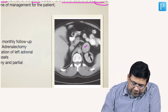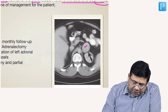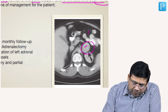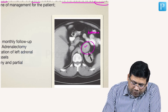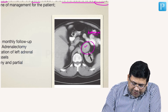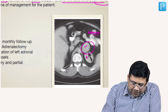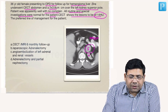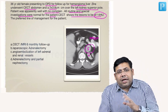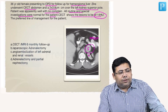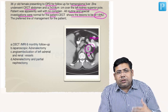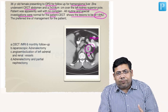First of all, let us see this image. Can you see on the left side? This is probably an adrenal mass — why? Because this is totally separate from the kidney. This is kidney, and this is adrenal. So it's an adrenal mass which has been diagnosed incidentally.